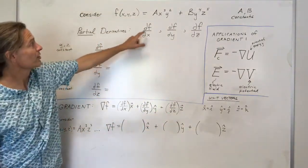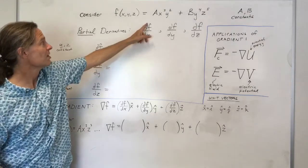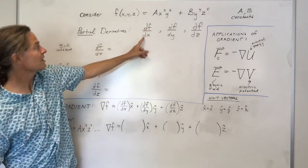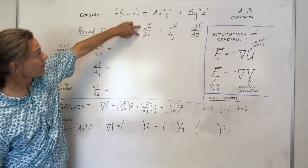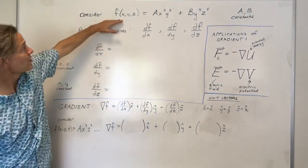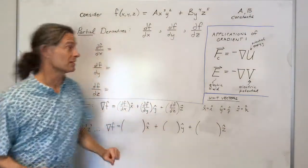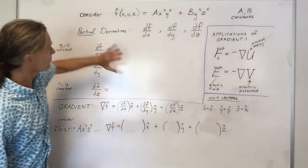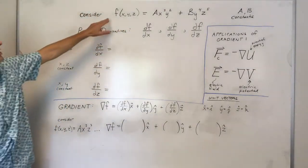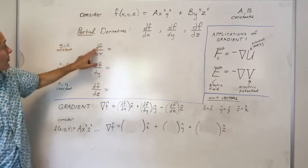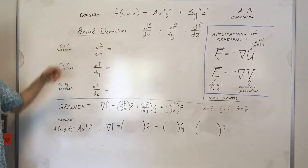We denote a partial derivative with a d that doesn't have a tail on it. So this ∂f/∂x — the partial derivative of f with respect to x — tells us how this function varies if we change x, but not y or z. Operationally, when you take the partial derivative of f with respect to x, you simply treat y and z as constants.